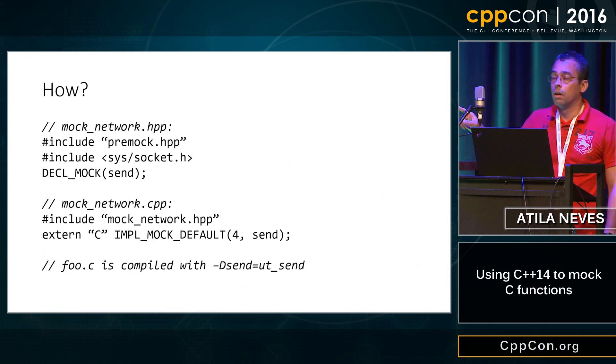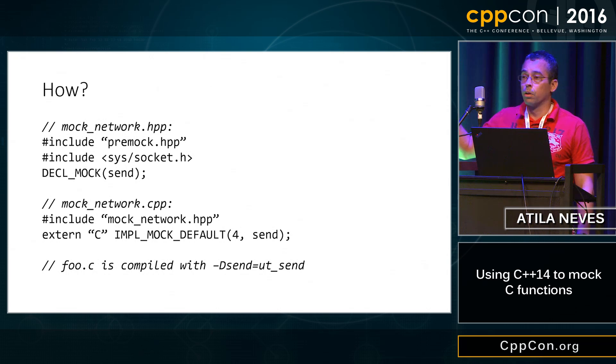Now notice also what's not here. I'm not telling the system or the framework in this case anything about send. I'm not, there's no return type anywhere, there's no argument list. The only thing I can't get rid of is that four and that four is the number of parameters that send takes and I literally can't see any other way of doing this. But you do this, your functions are mocked, everything's nice and the world is beautiful again. Thanks.